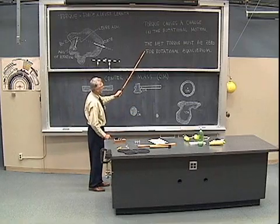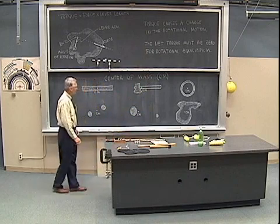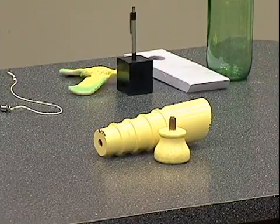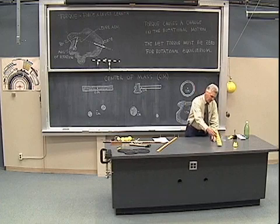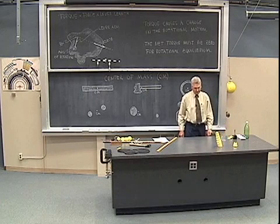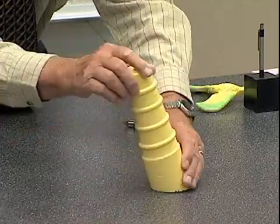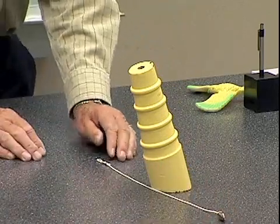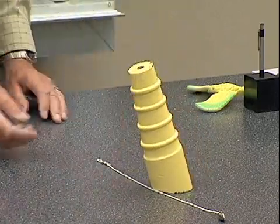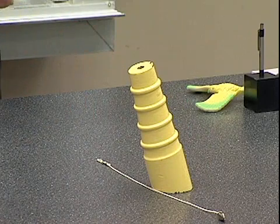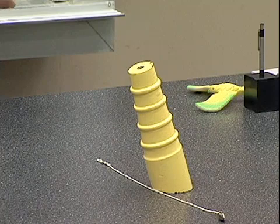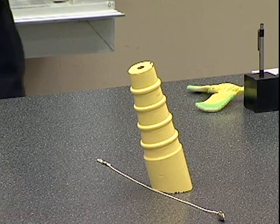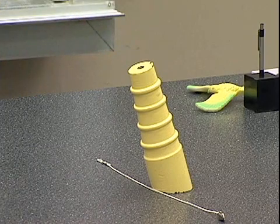The net torque must be zero for rotational equilibrium, and it follows that the center of mass must be such that gravity can produce no net torque. I can illustrate that further with the leaning tower. The leaning tower tends to tip over, but the reason it doesn't is that if it tips it rotates about an axis — represented here by this string. Because the center of mass is over on the other side of the axis, the gravitational torque tends to rotate it back, keeping it balanced.